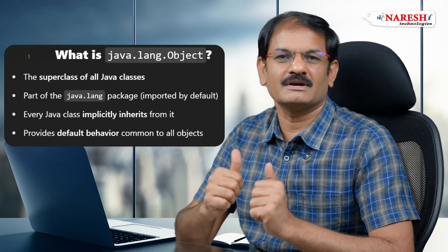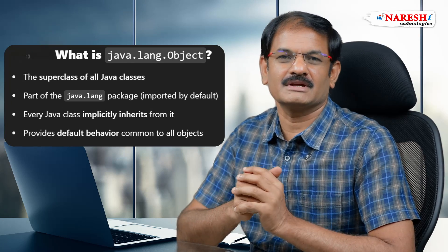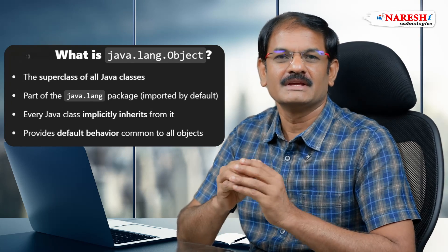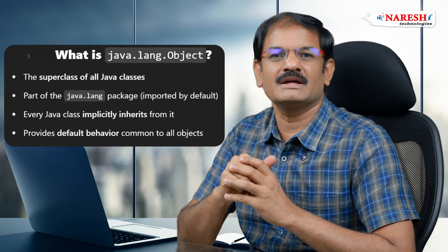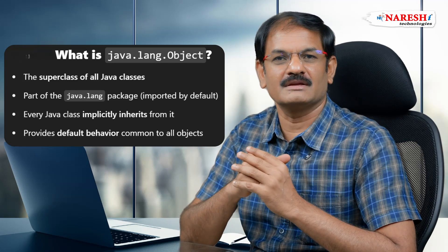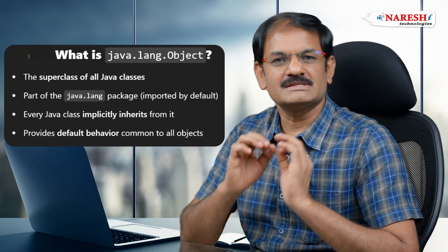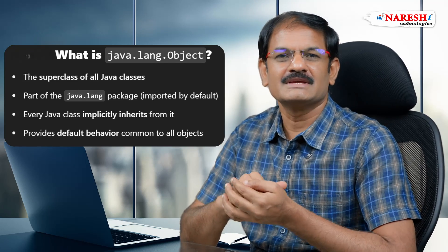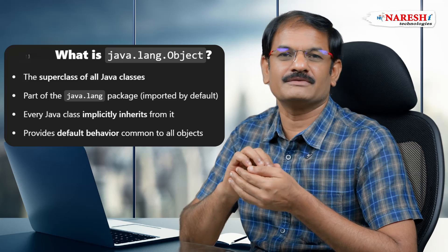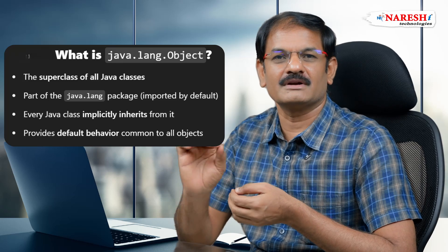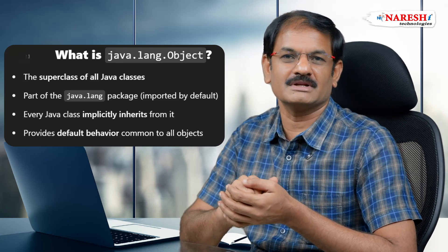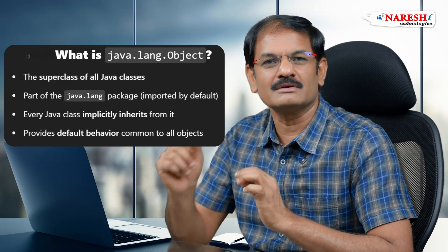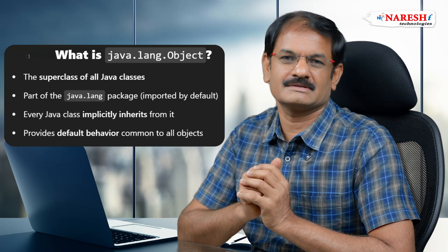So what is java.lang.object class? It is a predefined class. It is the root class of the entire class hierarchy. In Java, every user-defined and predefined class is derived from java.lang.object class, including primitive values and also arrays.